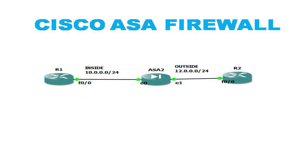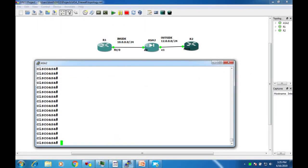Here is our lab topology. ASA1 is connected via two interfaces to Router 1 and Router 2. Router 1 is in our inside network and Router 2 is in our outside network. The inside network range is 10.0.0.0/24 and the outside network is 12.0.0.0/24. First, I will take a console of the ASA.